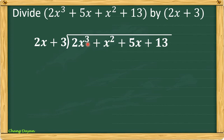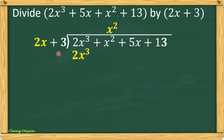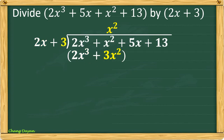Let us start the next example. The dividend is in descending order: exponents 3, 2, 1, and 0. Divide 2x cubed by 2x — the answer is x squared. Next, multiply: x squared times 2x gives 2x cubed. Then x squared times 3 gives 3x squared. Proceed to subtraction: 2x cubed minus 2x cubed is 0. x squared minus 3x squared...